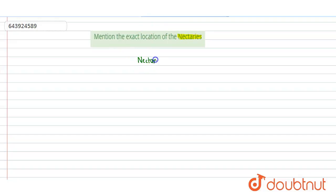Nectaries - these are specialized nectar producing structures in plants. Now what is nectar and why do they produce this nectar?